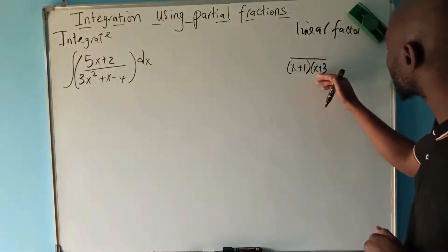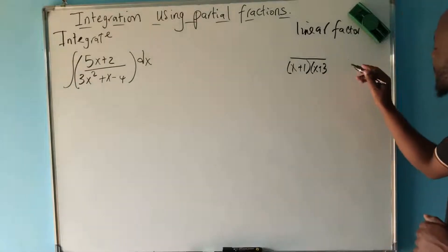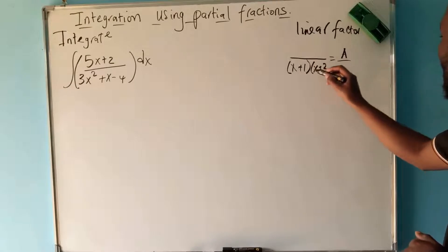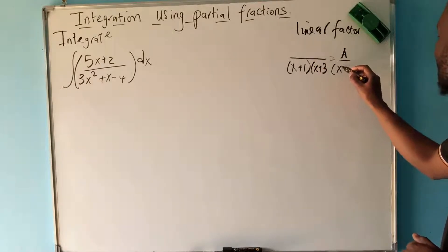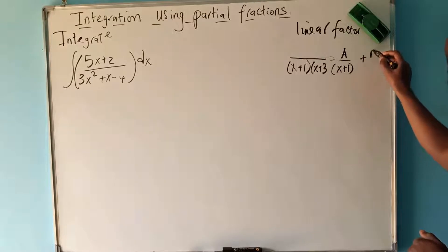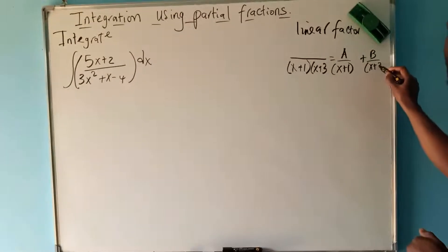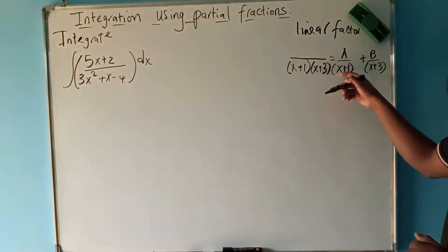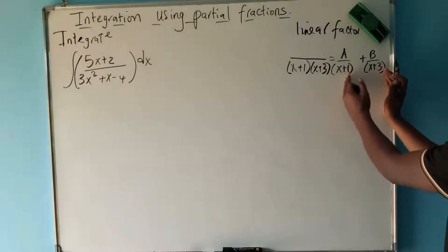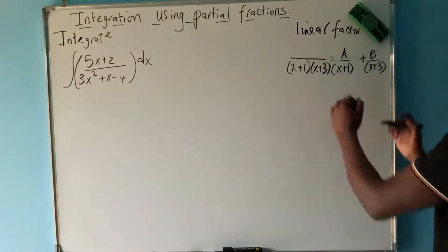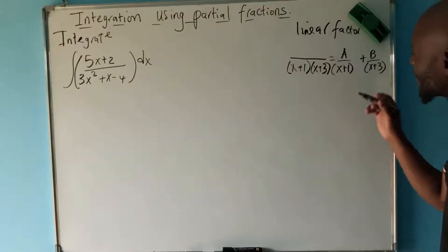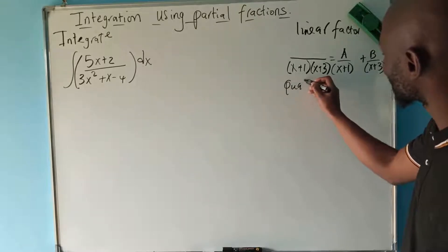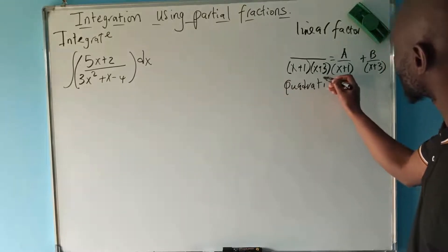If the denominator looks like this, you try to decompose into partial fractions. These will span out like this: you are going to have A over x plus one, plus B over x plus three. So if your denominator, after you factorize, has linear factors, your partial fractions will look like that. We can also have another form of factors — quadratic factors.